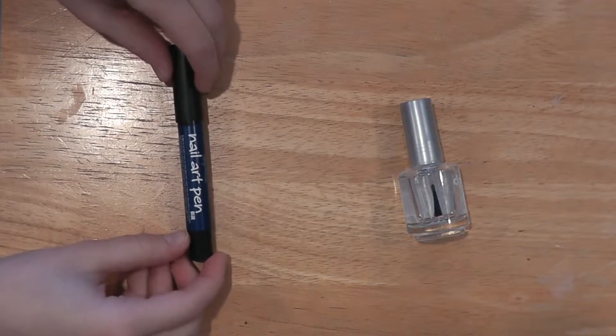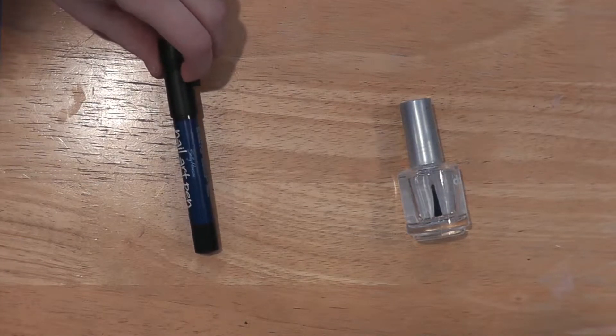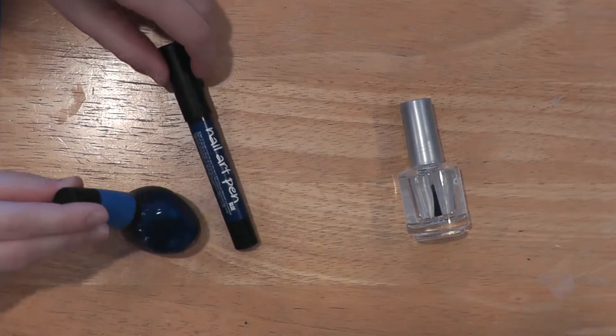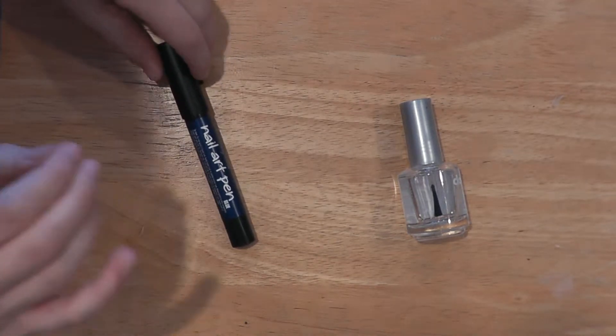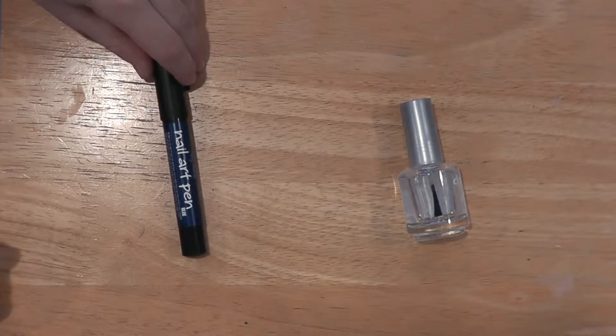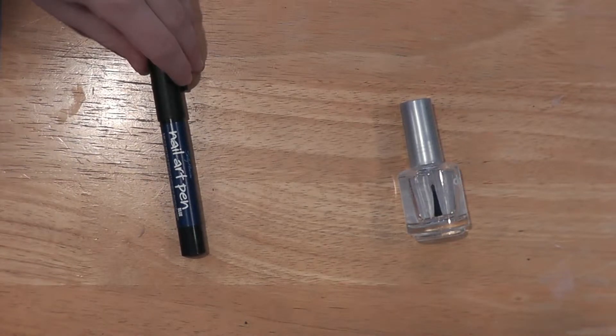Then I'm using a nail art pen that my friend gave me. It's a Sally Hansen nail art pen and it's the closest color I could find to the blue I'm using. If you don't have nail art pens that match, you can always use a toothpick and dip it into regular polish to do the detailed work.